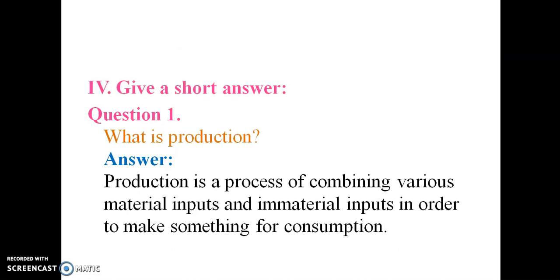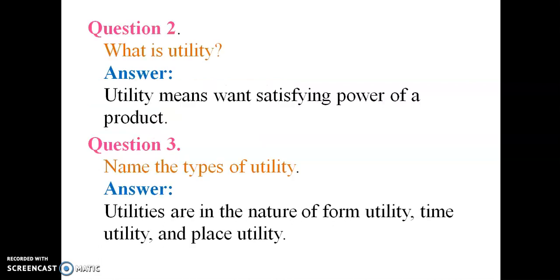What is production? Production is the process of combining various material inputs and immaterial inputs in order to make something for consumption. What is utility? Utility means the want-satisfying power of a product. Name the types of utility. Utilities are in the nature of form utility, time utility, and place utility.